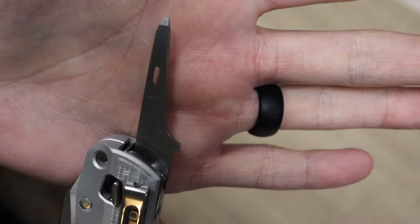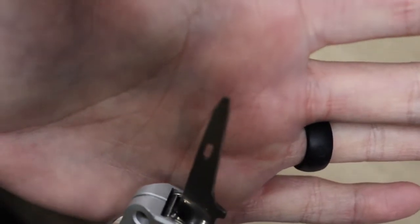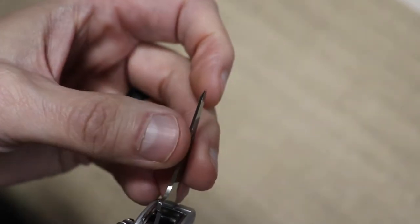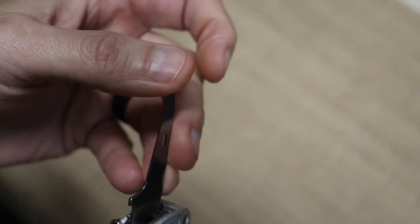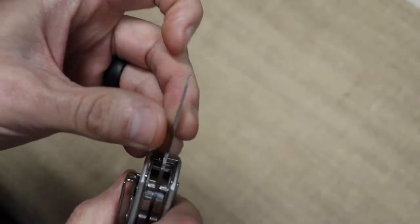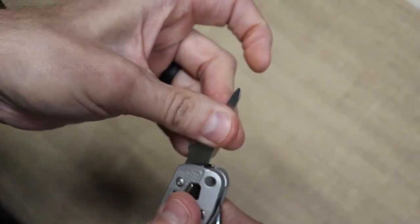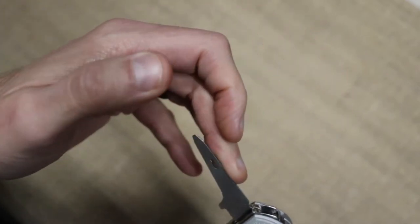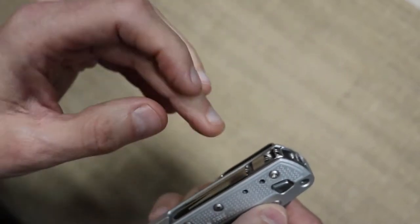Now, this is an awl with a micro screwdriver on it. And it's a pretty sharp point on there. So, if you need to punch through a little leather, you shouldn't have any problems. Now, you notice it's locked. This is not moving. So, you push up on this and it releases your tool.